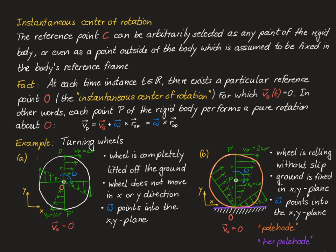In case A, both the pole hold and the her pole hold consist exactly of the single point o. In case B, the pole hold — all points of the rigid body that at some point become the instantaneous center of rotation — consists of all outer points of the wheel. The her pole hold — all points in the xy coordinate system that at some point coincide with the instantaneous center of rotation — consists of all points on the surface of the ground.